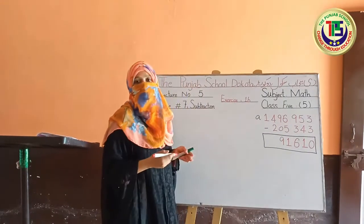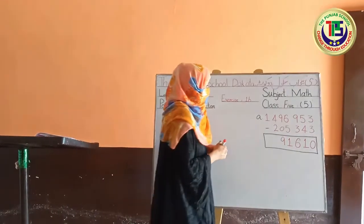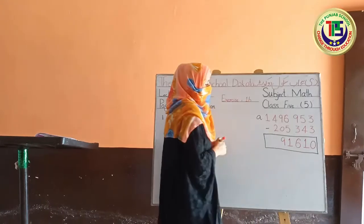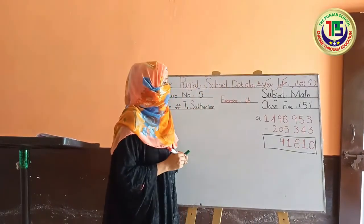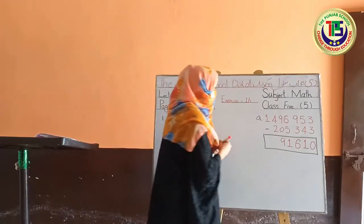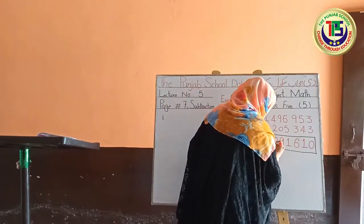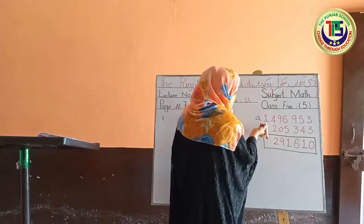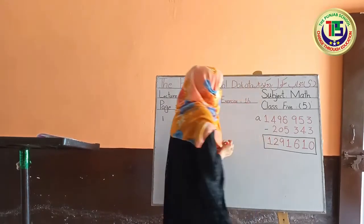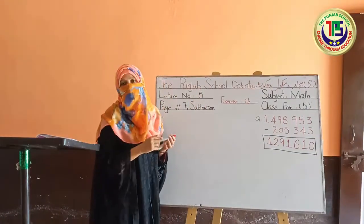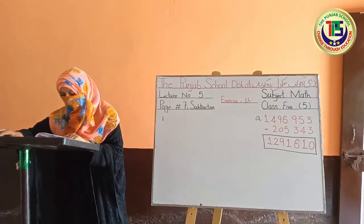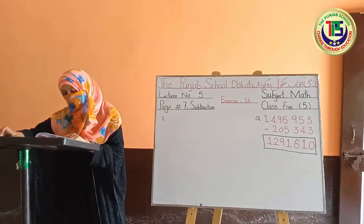Zero becomes valuable only when combined with other digits. Now 4 minus 2: I will count forward from 2 up to 4 — after 2 comes 3 and 4, so the answer is 2. And this 1 remains as it is because there is nothing below the 1 to subtract. So this is our answer — write it in your book exactly like this.